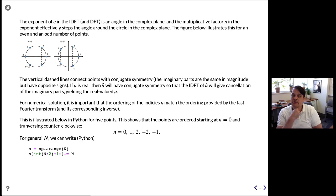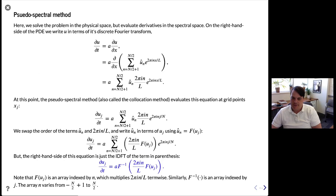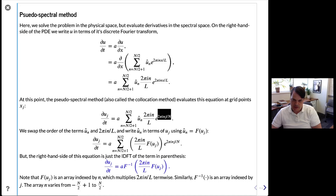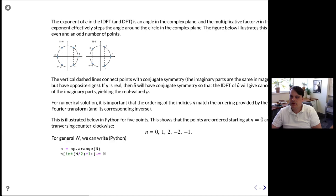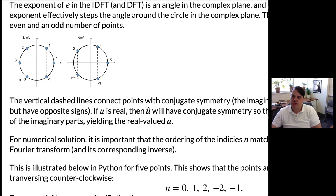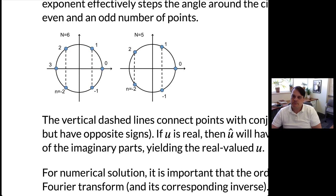You have to be a little careful: the exponent of e in the inverse Fourier transform is an angle in the complex plane. The multiplicative factor n in the exponent steps the angle around the circle in the complex plane. The exponent e^(2πinx/L) equals cos(2πnx/L) + i·sin(2πnx/L), so the argument is effectively an angle. As you increase n, you're stepping around the complex plane. There's a figure here illustrating n indexed for both even and odd numbers of points.